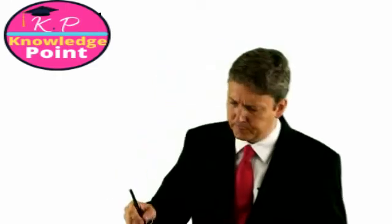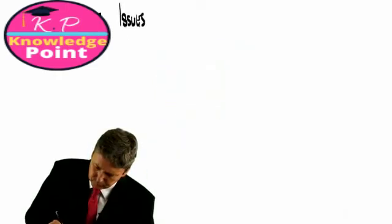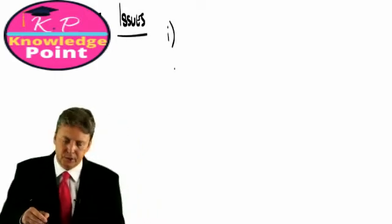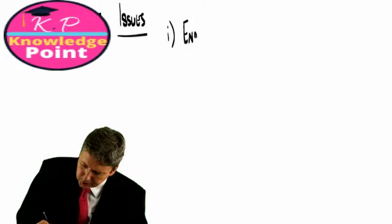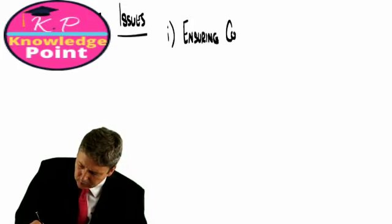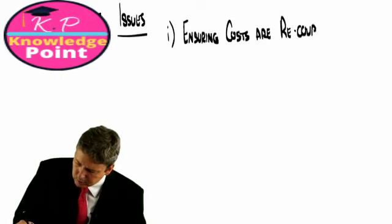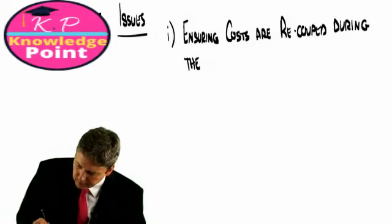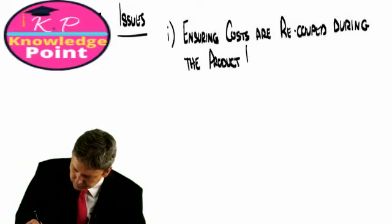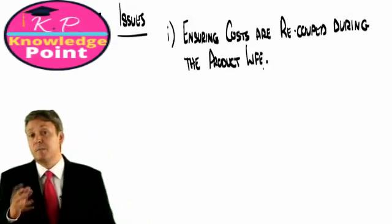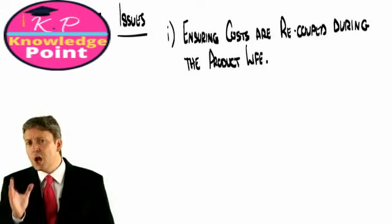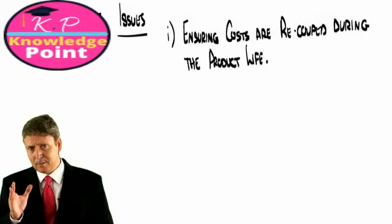So life cycle costing. What are the issues? The first issue is ensuring costs are recouped during the product life. So I suppose the issue is we've got to be very careful to know what the product cost is, because if we don't know the product cost, we may price wrongly.